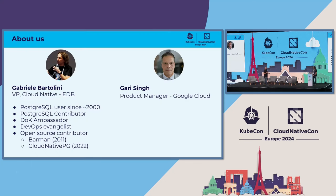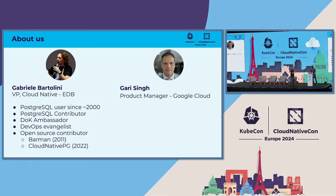My name is Gary Singh. I don't describe myself very much because I'm very secretive. So I'm just a product manager at Google, and I'm going to pass it over to Gabriella, who is much cooler than me.